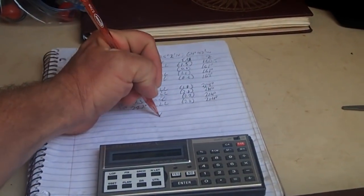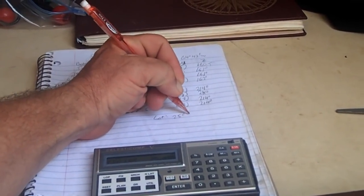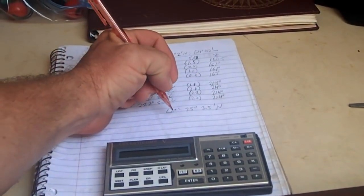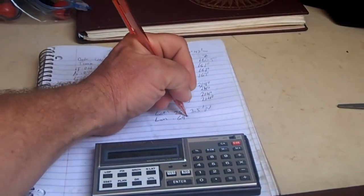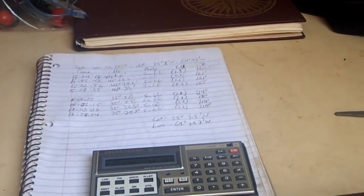So, it says our fixed latitude is 25 degrees, 3.5 minutes north, and our longitude is 64 degrees, 39.7 minutes west. All right, and so let's consult the GPS here.